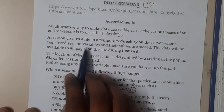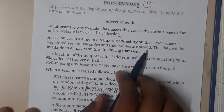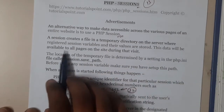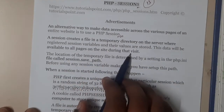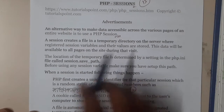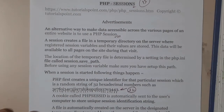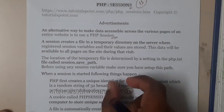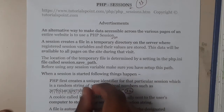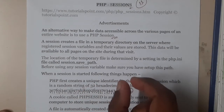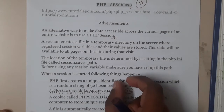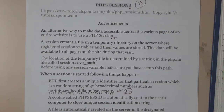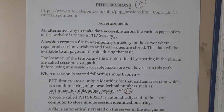A session creates a file in the temporary directory on the server where registered session variables and their values are stored. This data will be available to all the pages on the site during the visit. Basically, whoever visits the page, a particular cookie is assigned to them, and that cookie's data will be stored in the session, along with the particular page details — what details to show on the page.